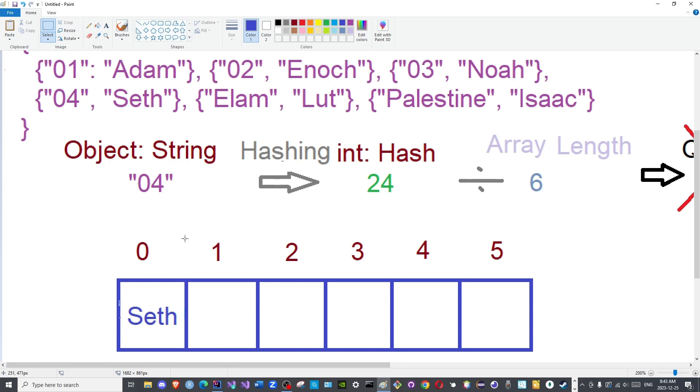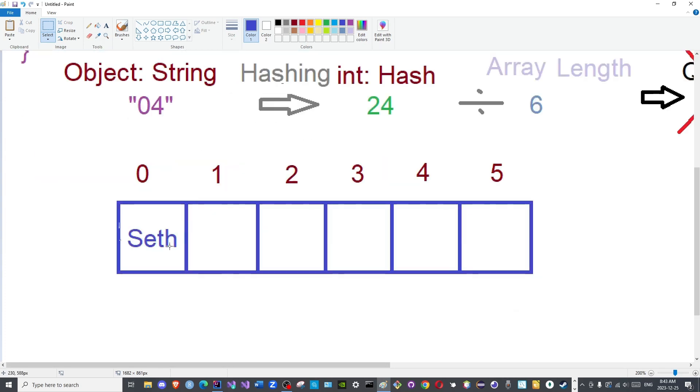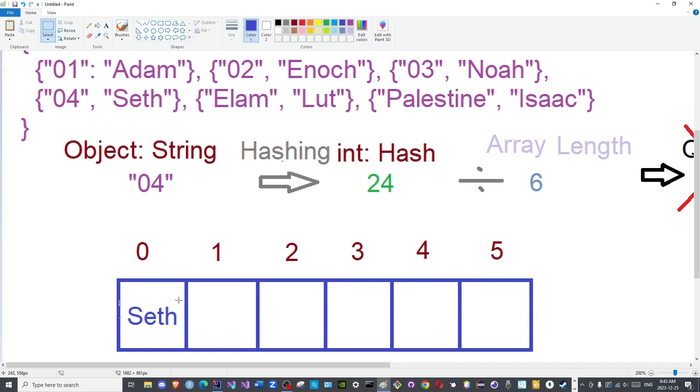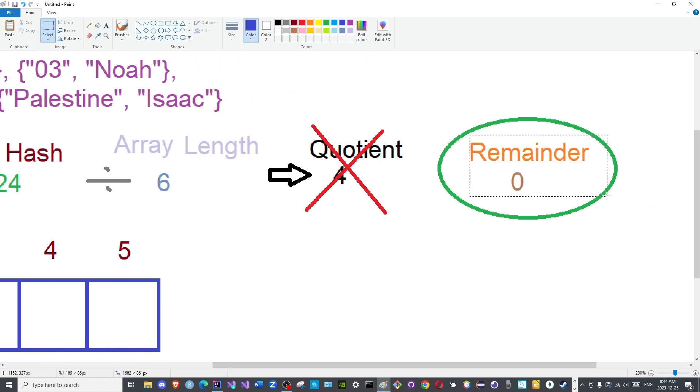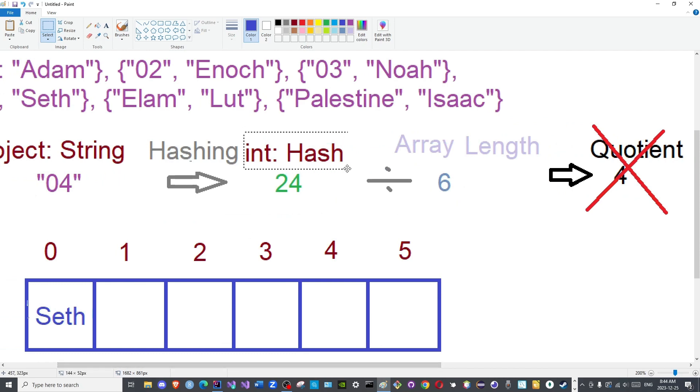And this remainder functions as the index of the array at which the value will be stored. So as you can see, with hash tables, the data is not stored based on sequential order, as with arrays, array lists, and linked lists, but rather they are stored based on the remainder of the division between the hash and the array length.